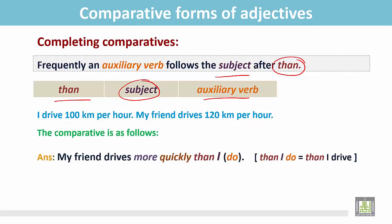In this sentence, we find that I am driving at 100 km per hour and my friend drives 120 km per hour. So, my friend drives more quickly. Here, I write my friend drives more quickly. This is the comparative form.